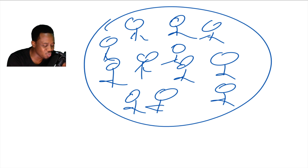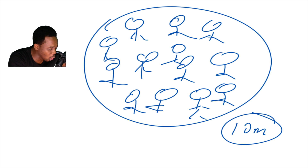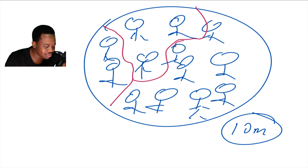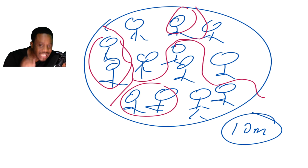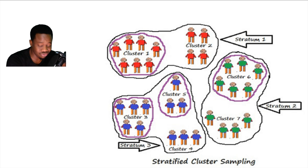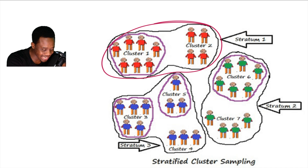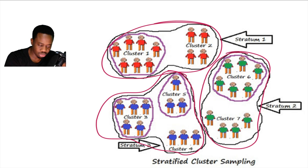Assume you have a population of maybe 10 million people. In cluster sampling, you can just cluster them with no method - you can even close your eyes and cluster them. But for stratified sampling, there must be a method. In cluster sampling it is anyhow, but in stratified there will be something that matches all of them. For instance, in this stratum they all wear red, in this stratum they all wear green, in this stratum they all wear blue.